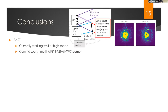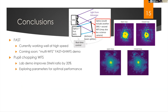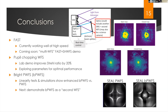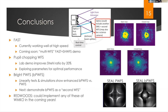I've presented three different second wavefront sensor concepts: FAST, pupil chopping, and the bright pyramid wavefront sensor, all of which could be implemented in the future on Redwoods. And actually, pupil chopping in principle could be implemented now in a couple of ways on Keck. Thank you.